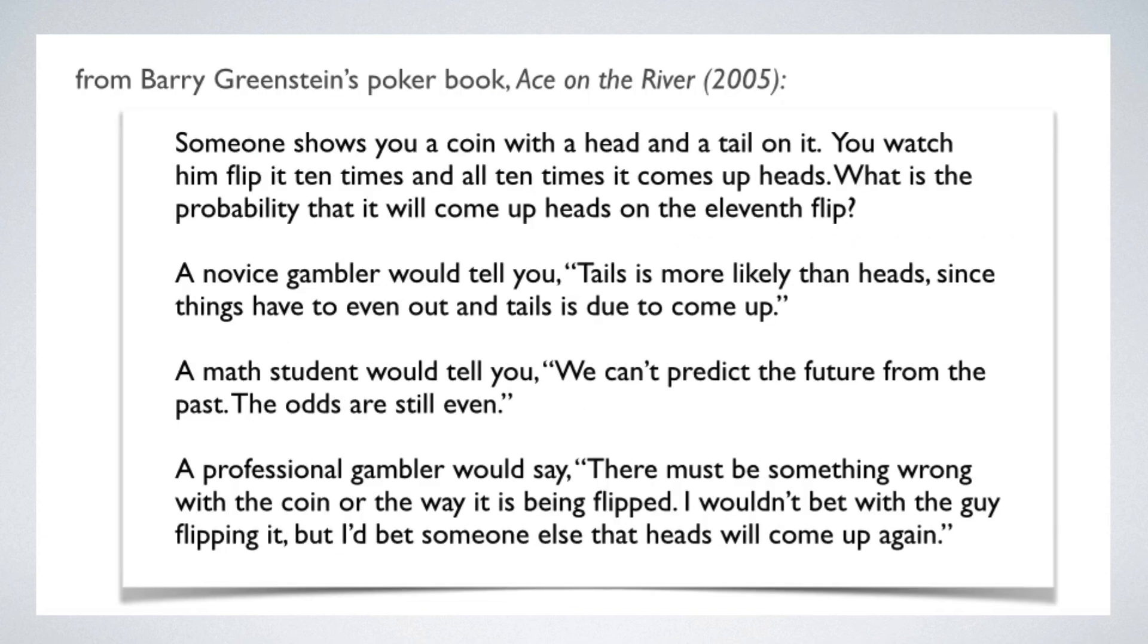Barry Greenstein is a professional poker player, and he has an apt comment on this question in his book, Ace on the River. Someone shows you a coin with a head and tail on it. You watch him flip it 10 times, and all 10 times it comes up heads. What's the probability that it will come up heads on the 11th flip? A novice gambler would tell you, tails is more likely than heads, since things have to even out and tails is due to come up. That's the gambler's fallacy.